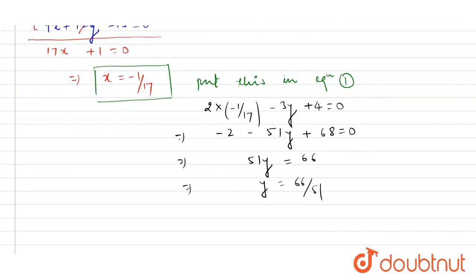And on cancellation, you can say y is nothing but 22/17.